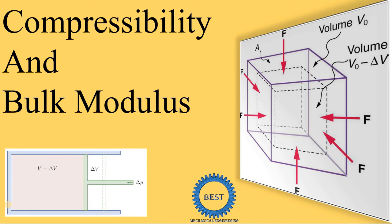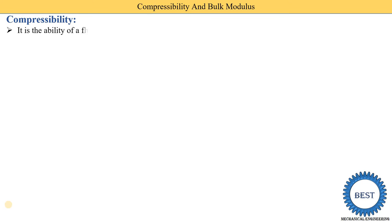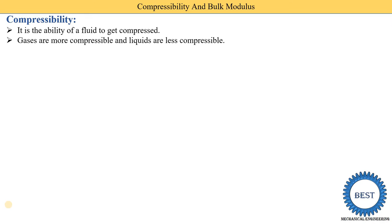In this video I discuss compressibility and bulk modulus. First, compressibility is the ability of a fluid — gas or liquid — to get compressed. Gases are more compressible and liquids are less compressible. This is because the distance between molecules is greater in gases and less in liquids, which is why gases are more compressible and liquids are less compressible.